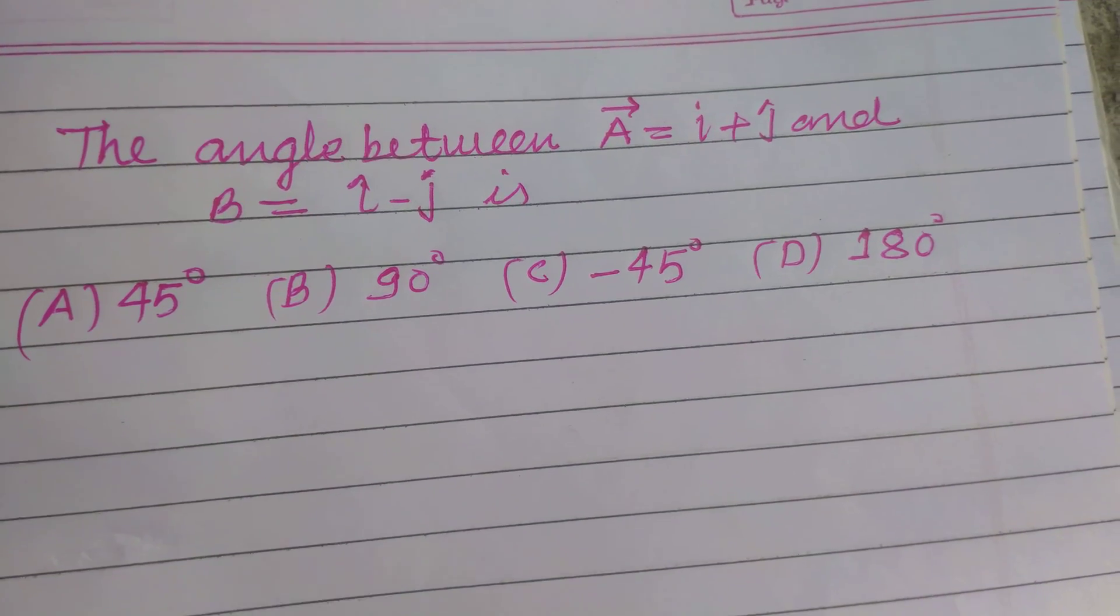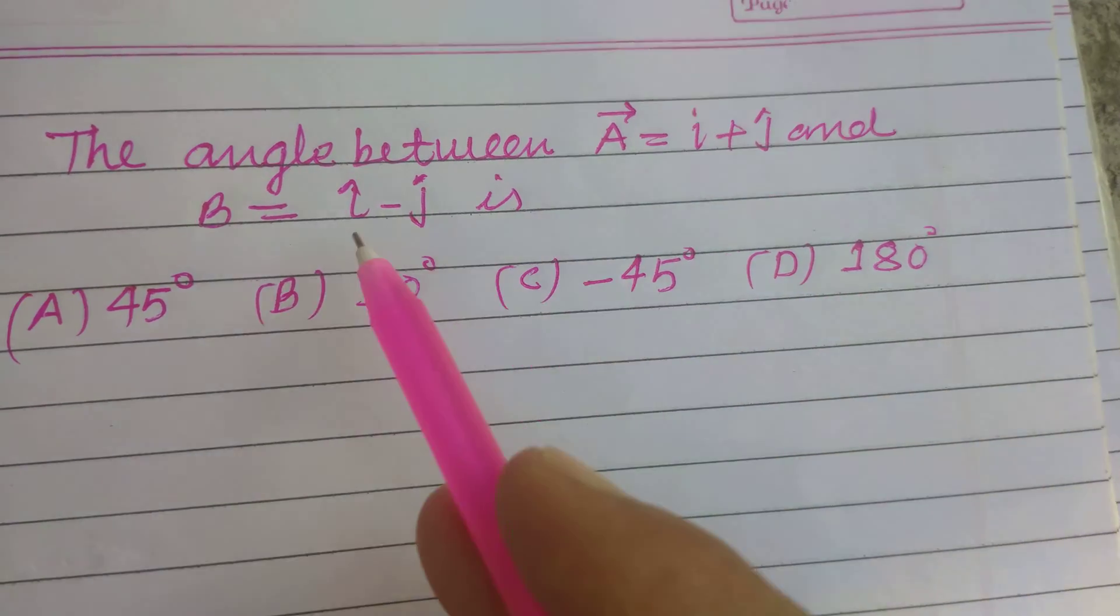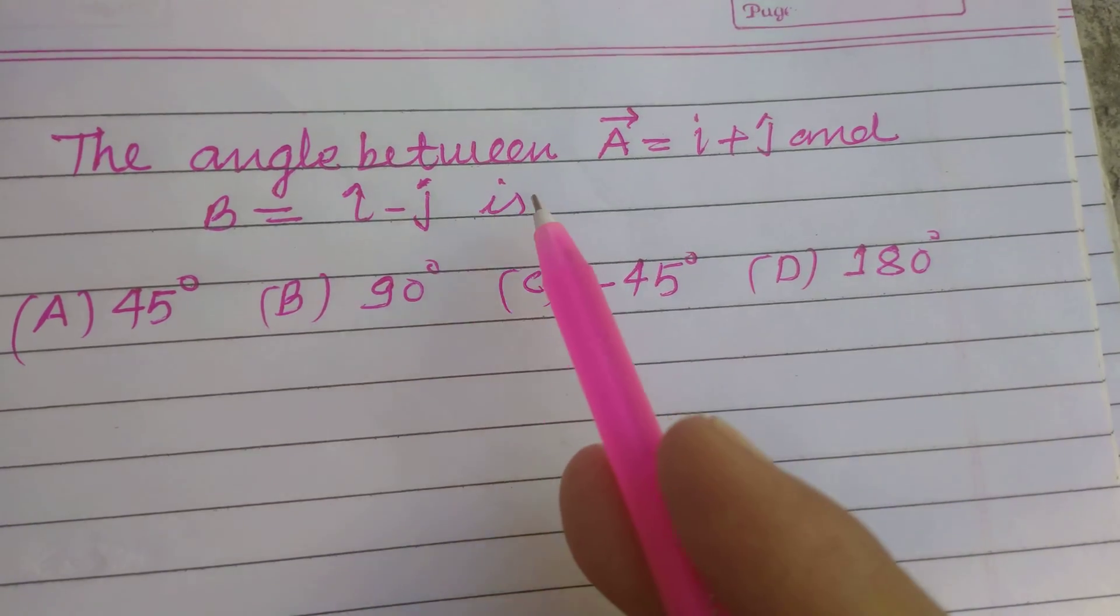Hello students, welcome to this YouTube channel. The angle between vector A equal to i plus j and vector B equal to i cap minus j cap is: